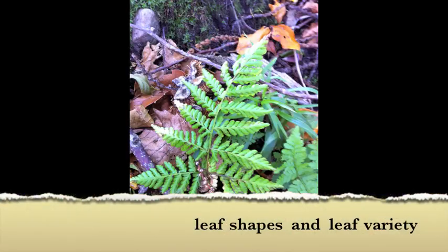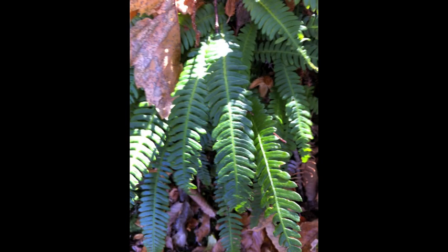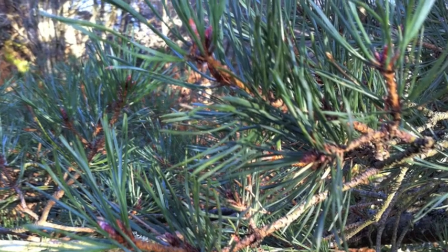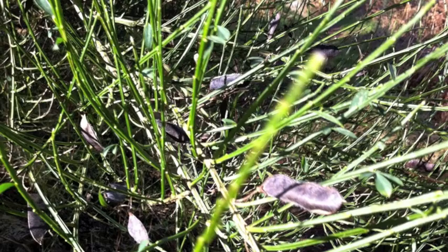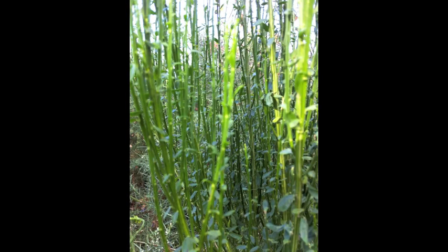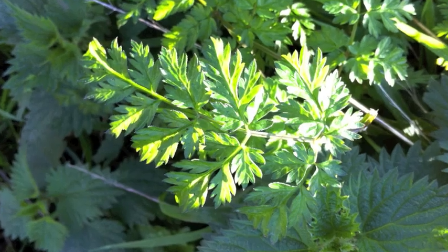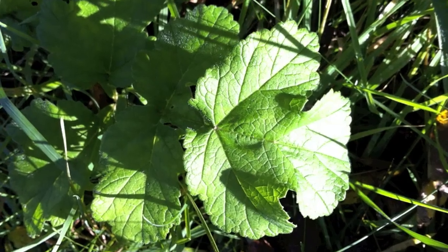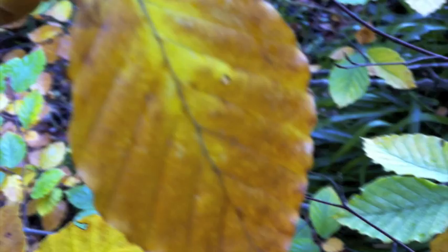Every plant has different shapes of leaves as they have coped in different environments. For example, evergreen trees and cactus have lots of long, thin, needle-like leaves to reduce the loss of water in their habitats as it is extremely dry. Whereas in wet countries, plants have broader leaves to increase the amount of light energy captured.